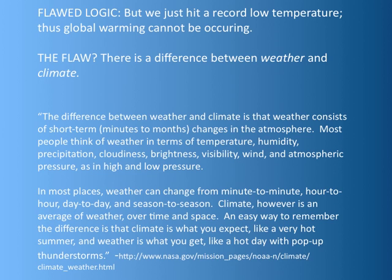The definitions given by NASA state that weather consists of short-term changes — minutes to months — in the atmosphere, and that weather can change from minute to minute, hour to hour, day to day, and season to season. However, climate is the average of weather over time and space. When we talk about global warming, we are not talking about what's happening in western Pennsylvania on a particular date or month. Instead, we are talking about vast spaces and vast times, and averaging over both.